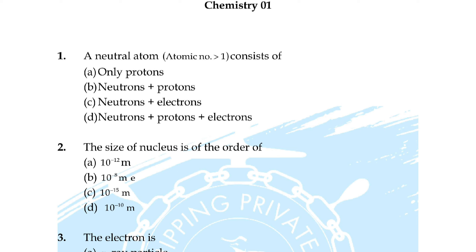Question number 26: the value of the gas constant R is — option A: 0.082 liter atm, B: 0.987 cal mol⁻¹ K⁻¹, option C: 8.3 J mol⁻¹ K⁻¹, option D: 8 — [answer cut off].